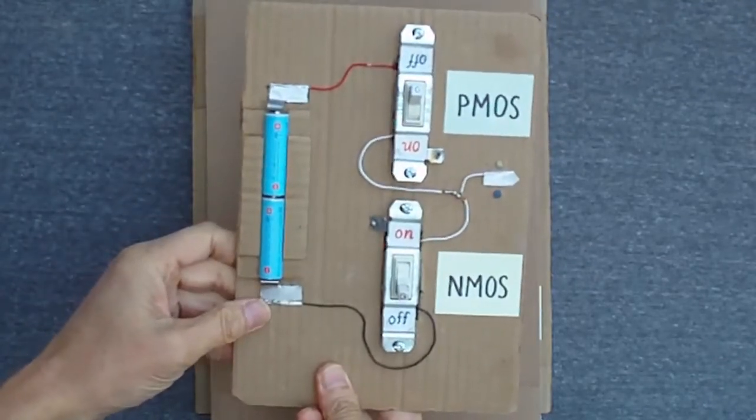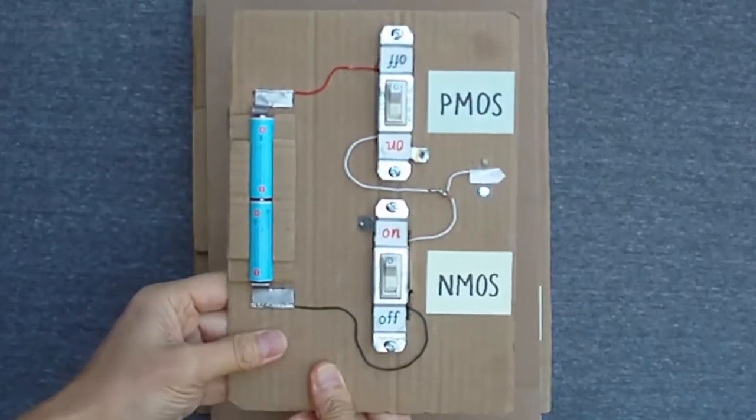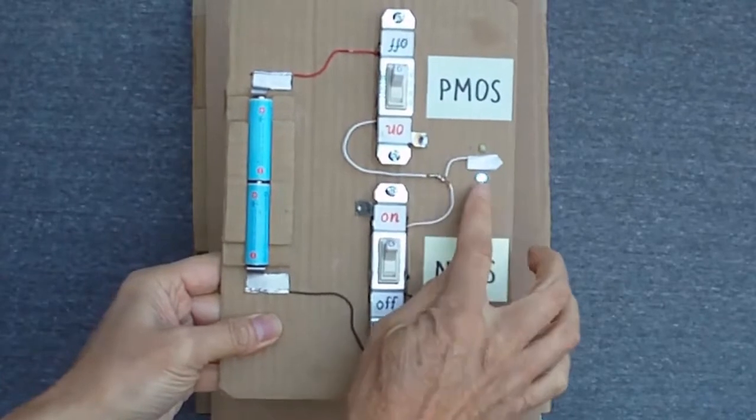When I apply a high voltage to the NMOS gate, the NMOS source and drain are connected, and the NMOS drain is pulled down to ground, as indicated by the blue light.